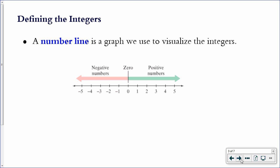A number line is the graph that we use to visualize the integers. I'm sure you've seen number lines before. They can be really helpful when adding and subtracting with numbers. You can count up the number line or down the number line if you're subtracting.